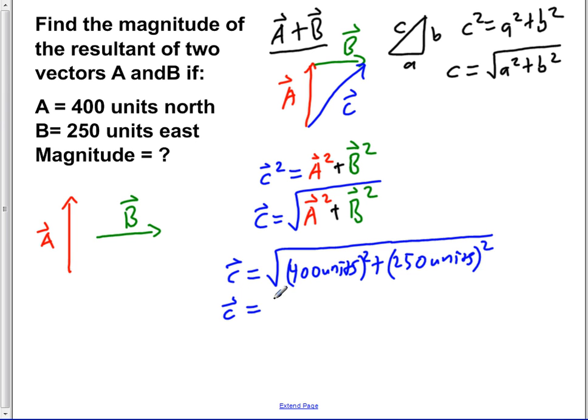Now if we square both of these, we would get 160,000 square units plus 62,500 square units.